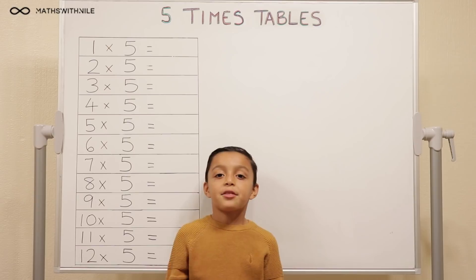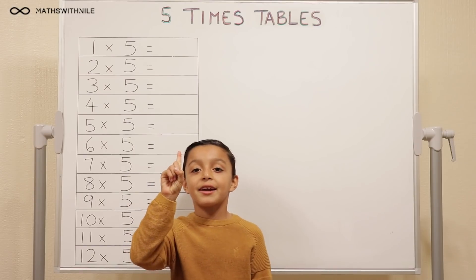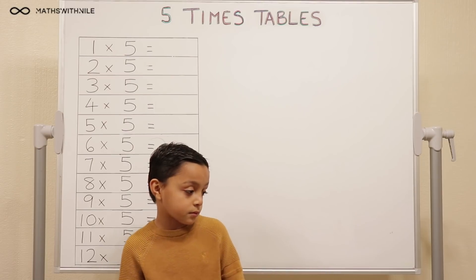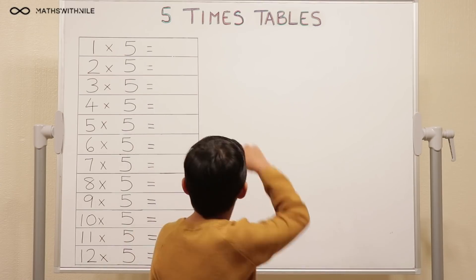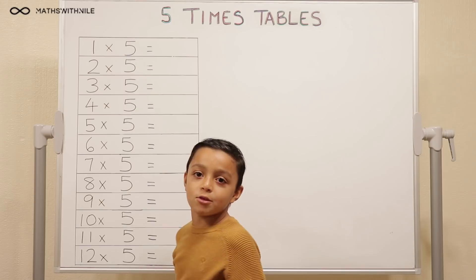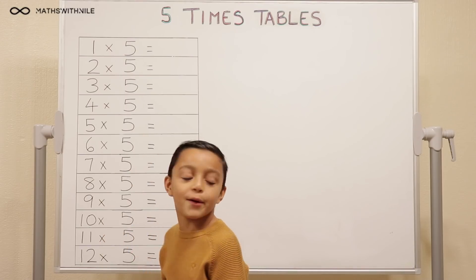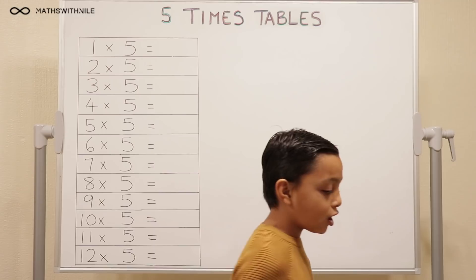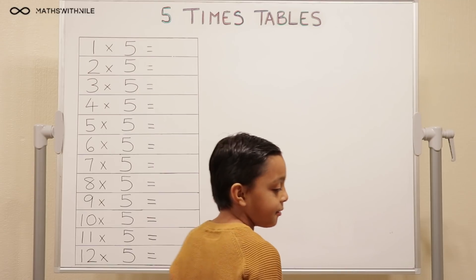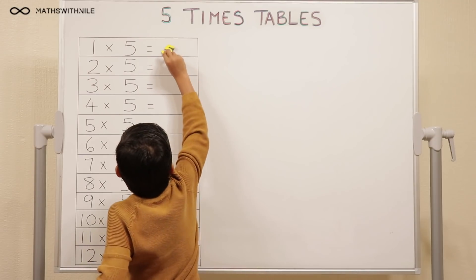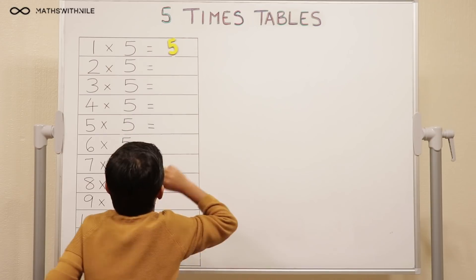Can you explain? So one finger equals five. So can you start off by doing the first question? One times five, so one little five — five. So I'll get my answer and I'll put it on the board. Five.